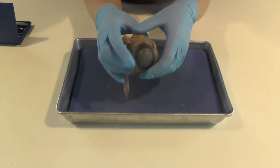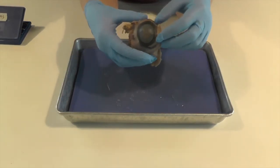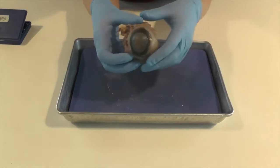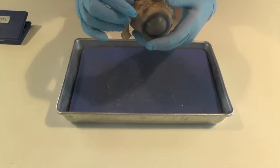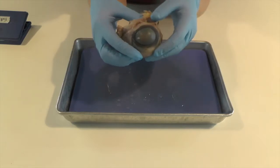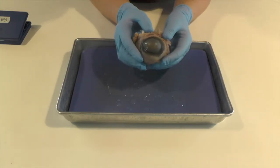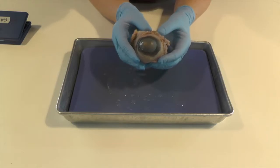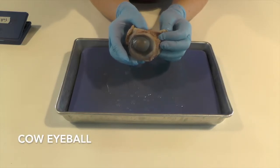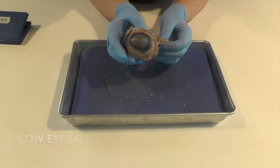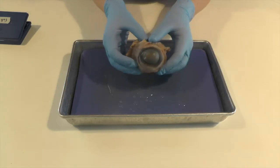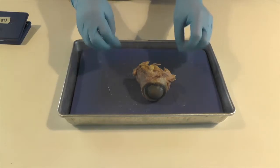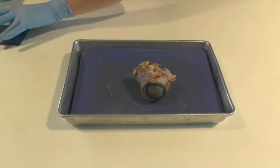So here we have a cow eye that we're going to dissect. Scientists like to dissect things to get a better understanding of how things work. We do not have a cow farm here at Spectrum. We order them from a company that sells things to science museums, scientists, and labs.